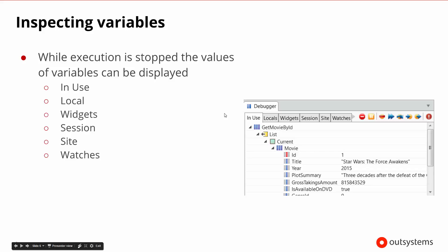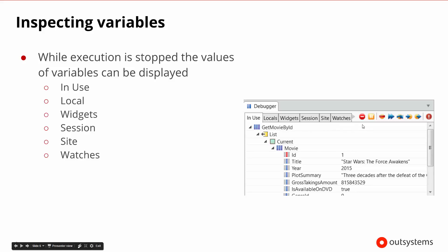In the debugger tab at the bottom, the breakpoints will be to our left, but underneath the main tabs we'll be able to see all the variables currently in use — all the local variables, any variables tied to widgets, any variables from the session or from site, and any variables we've put on watches. Not all of these will apply to our mobile app, but we can use the tabs to get more information about the variables. The controls we mentioned are here as well, all together in the debug tab at the bottom of the screen.